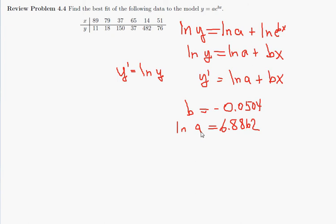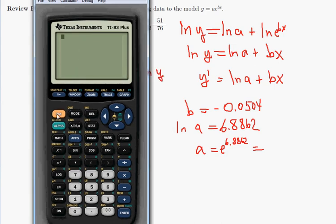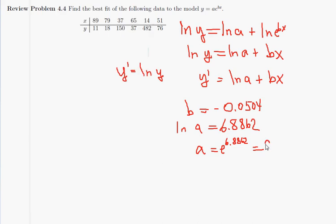Now for this problem, we have to do a quick transformation to solve for what a itself actually is. So a would be equal to e to the 6.8862. And if we do that calculation real quick, e to the 6.8862 is equal to 978.68. And so using the a and the b, we have our answer that the fit itself would be y is equal to 978.68 times e to the negative 0.0504x.